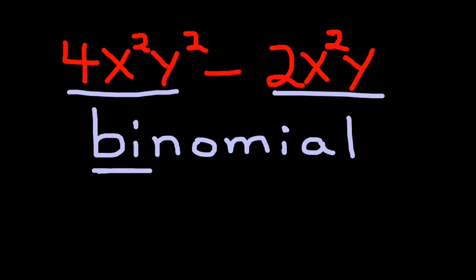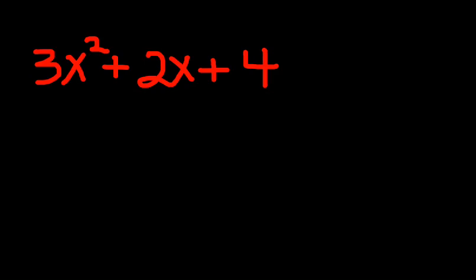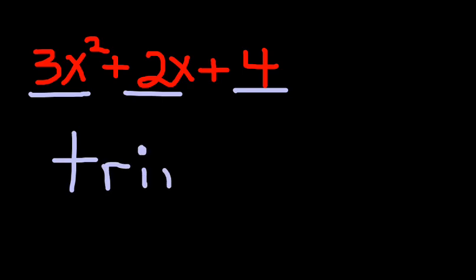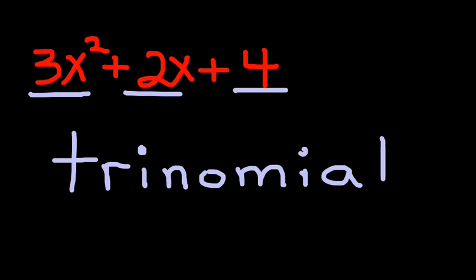Then if we add one more here, this one has one, two, three terms. This is called a trinomial. Again, if you want to use that same analogy, think tricycle. It has three wheels, and a trinomial has three terms. So this is a trinomial.